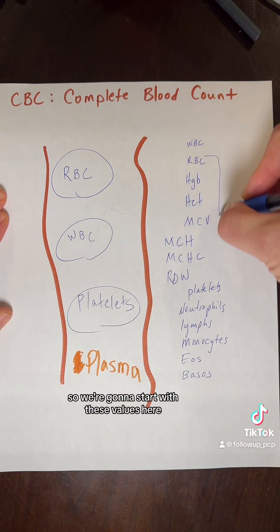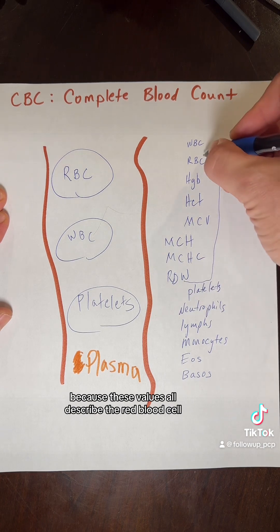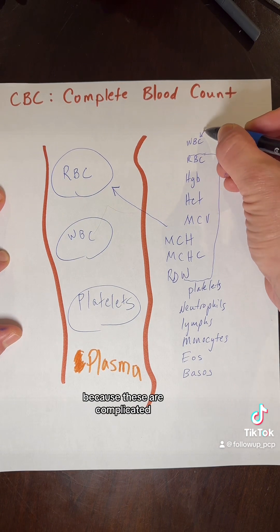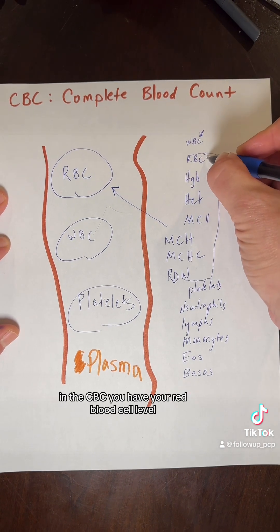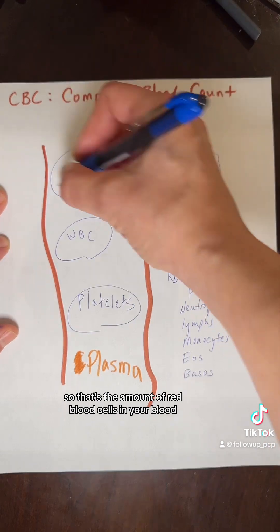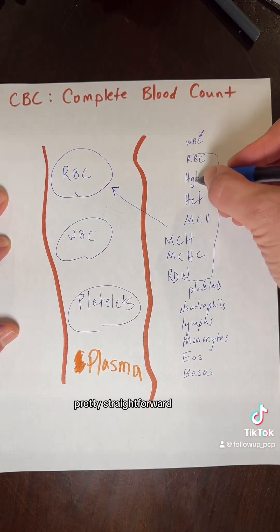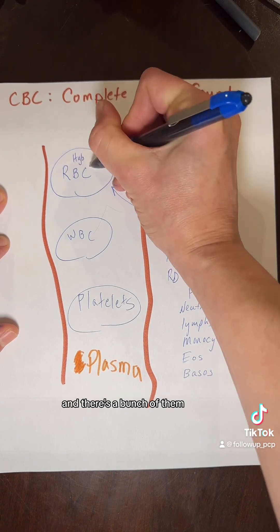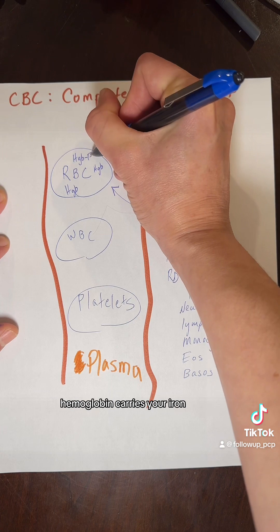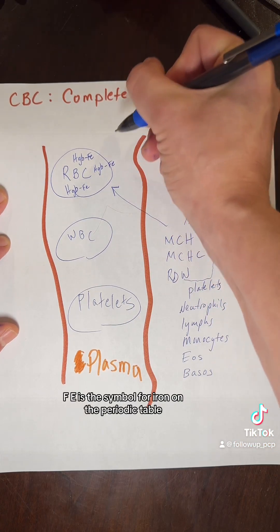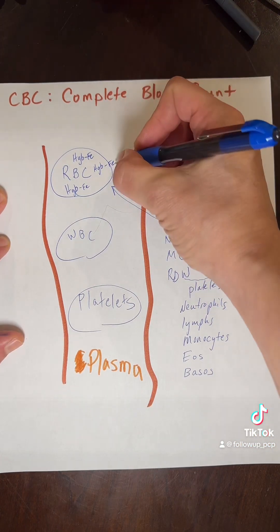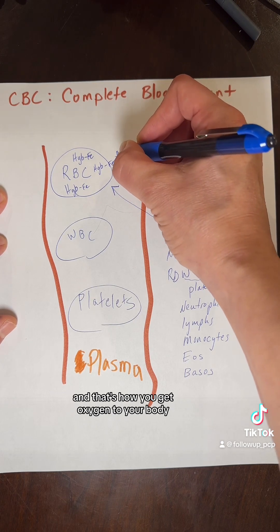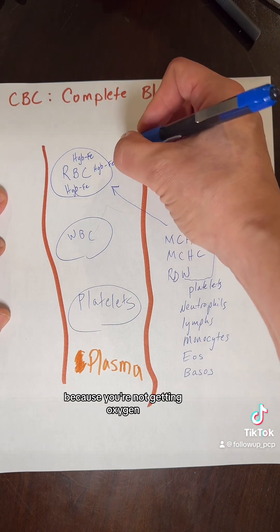We're going to start with the values that describe the red blood cell. In the CBC you have your red blood cell level — that's the amount of red blood cells in your blood. Hemoglobin is a protein that lives inside your red blood cells. Hemoglobin carries your iron, and iron then carries your oxygen — that's how you get oxygen to your body. That's also why you're short of breath when you're anemic, because you're not getting oxygen.